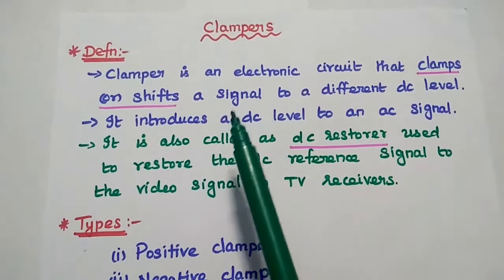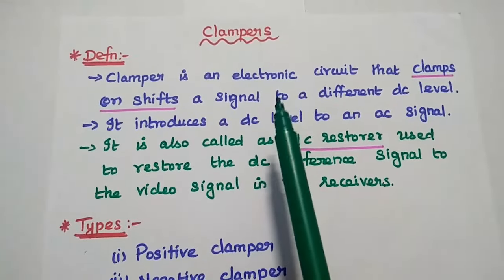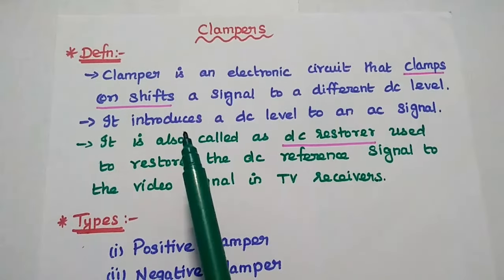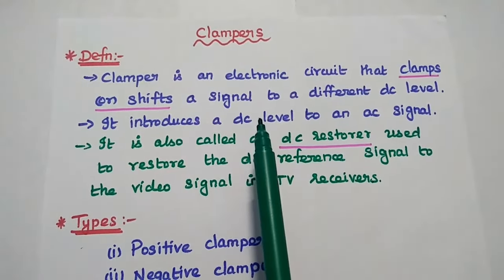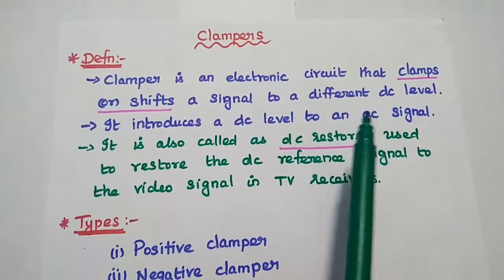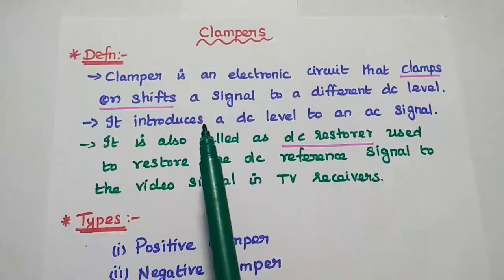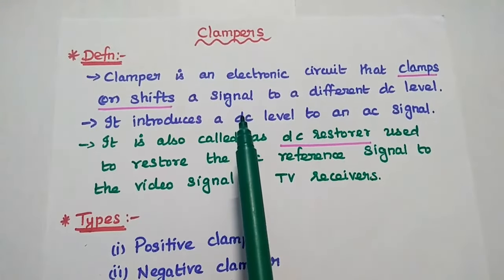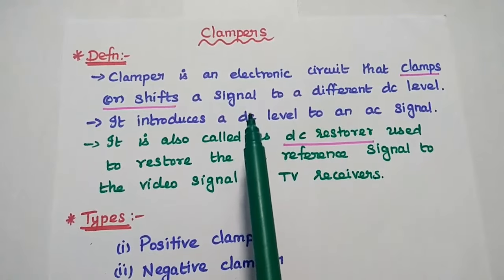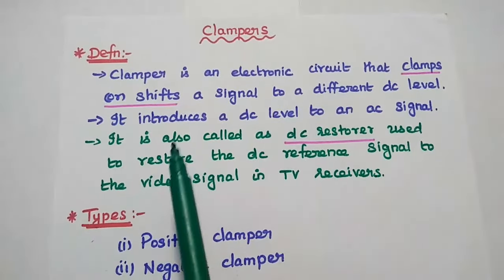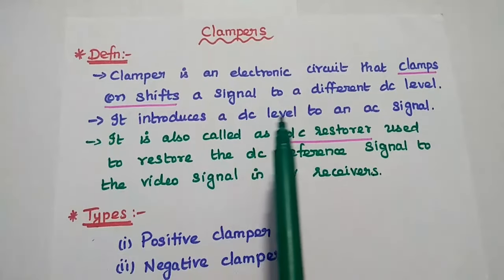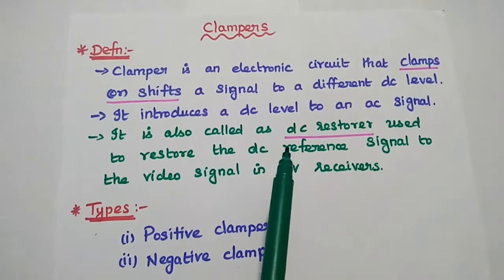Dear students, now we are going to discuss clamper and its types in detail. Let's start with the definition. A clamper is an electronic circuit that clamps or shifts a signal to a different DC level. Here AC signal is given as input and shifted to a different DC level — that means the clamper circuit introduces a DC level to an AC signal.